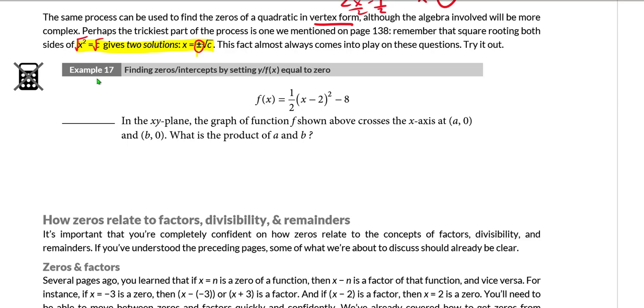If you want to try it on your own, pause the video. Example 17: In the xy-plane, the graph of the function f shown above crosses the x-axis at (a, 0) and (b, 0). The question wants the product of a and b. So the question is simply asking for the product of the two x-coordinates at the x-intercepts of this quadratic, of this parabola. As always, when we want the x-intercepts or the zeros, we are going to make f(x) equal to 0. So my equation becomes 0 = 1/2(x - 2)² - 8.